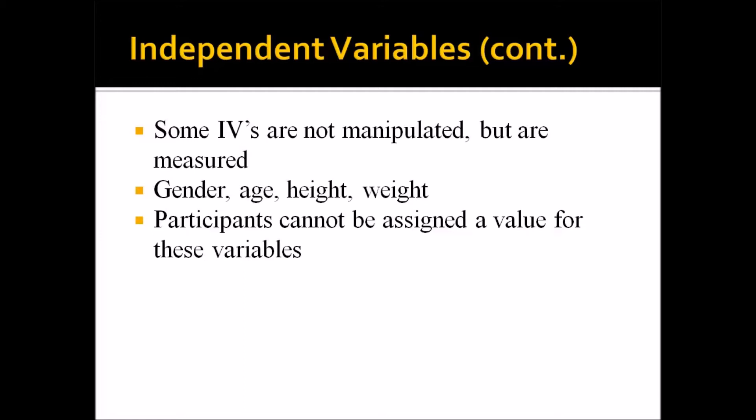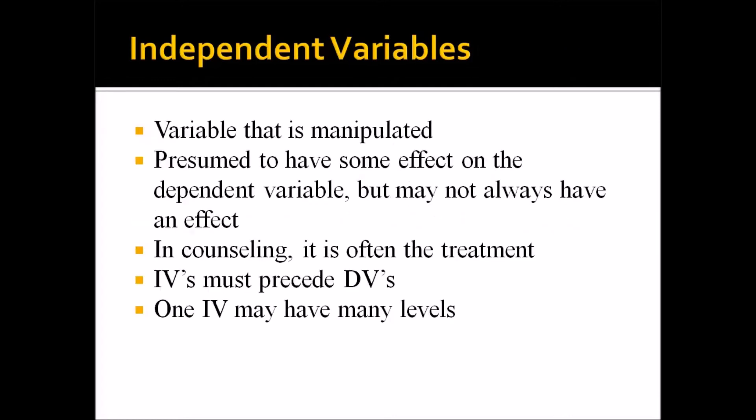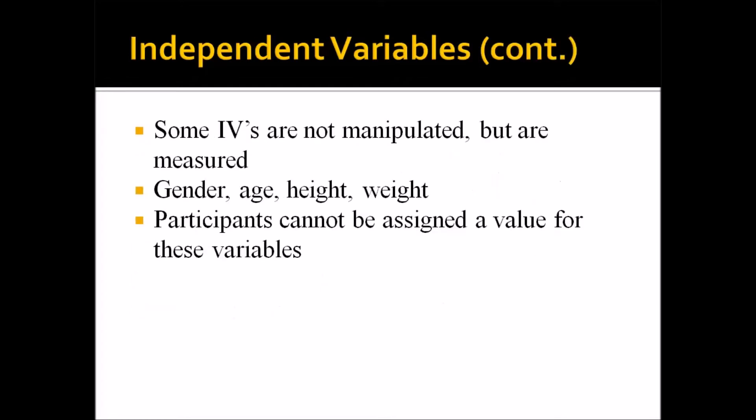We simply measure the characteristics and proceed with the analysis as if the variable were an independent variable. It is an independent variable, but the manipulated and non-manipulated types represent an important distinction in counseling research. The traditional independent variable is manipulated to have some effect on a dependent variable, but gender, age, height, weight, and many other non-manipulated independent variables could also have an effect on a dependent variable.